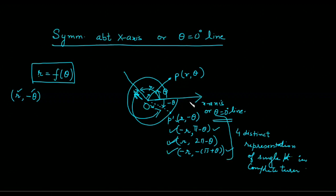If all four are not satisfying, then your graph is not symmetrical about the x-axis, or the theta equals zero degree line. Basically, whenever point P lies on the graph, if P' also lies on the graph, we say the graph is symmetrical about the x-axis. For P' we check four distinct representations. If any one of them satisfies the graph, then we say our graph is symmetrical about the x-axis.